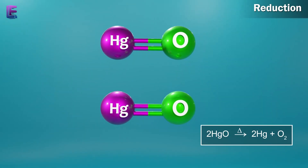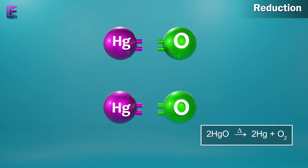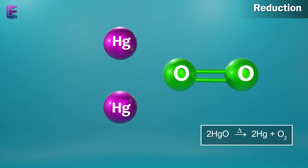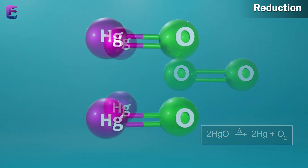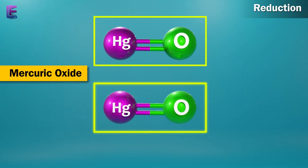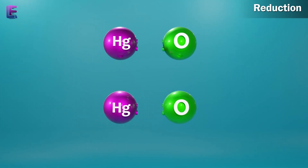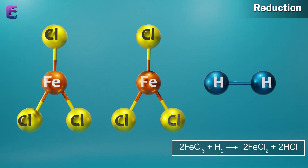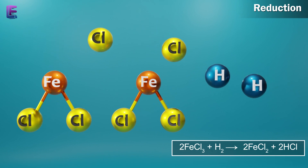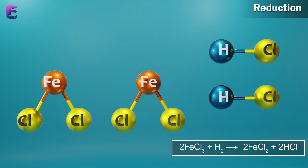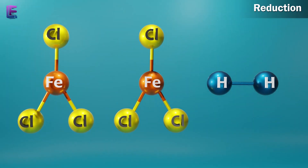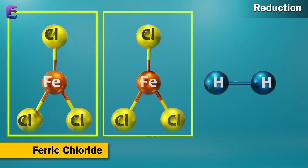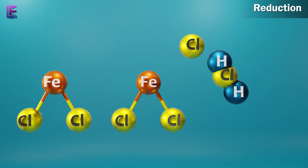2HgO gives rise to 2Hg + O2. In this reaction, oxygen is removed from mercury. 2FeCl3 + H2 gives rise to 2FeCl2 + 2HCl. In this reaction, electronegative chlorine is removed from ferric chloride.